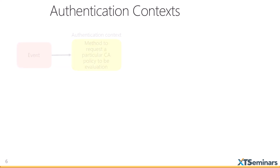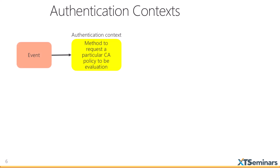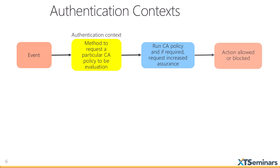Before we can talk about protected actions we need to understand authentication context. Authentication context provides a method of getting a conditional access policy to be evaluated. An event triggers an authentication context, which in turn gets a particular CA policy evaluated. In that CA policy we can ask for increased assurance - has someone agreed to terms of use, has someone done MFA? We could allow an action or completely block it based on parameters such as network location, whether they're using a compliant device, who the user is, and so on.